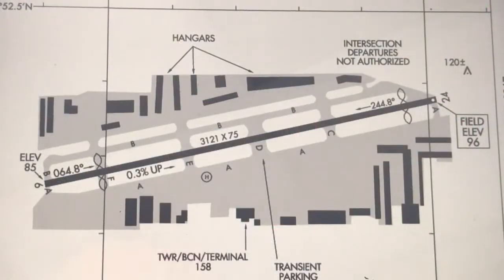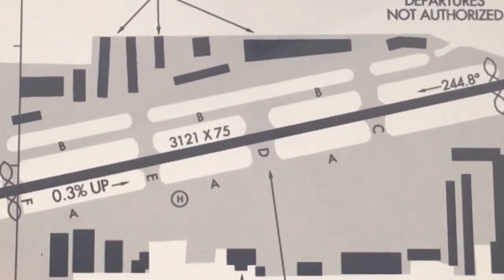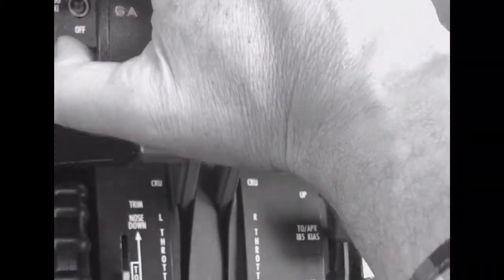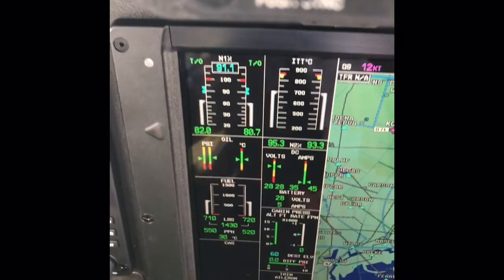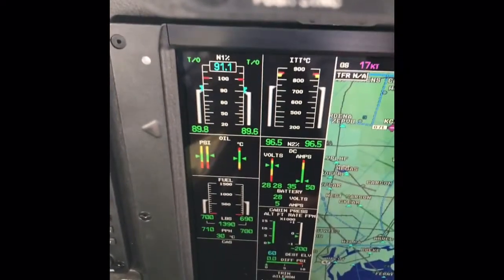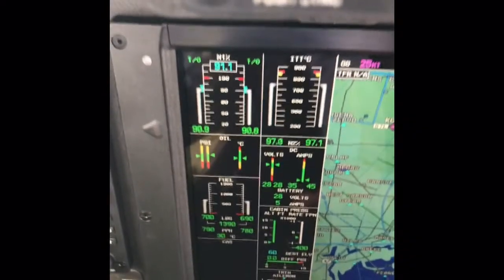If the runway available is within a thousand feet of the required balance field length, we suggest a static takeoff procedure. This involves holding the brakes while bringing the throttles to takeoff power, then checking the indicated N1 is equal to the FADEC targeted N1 prior to releasing the brakes.